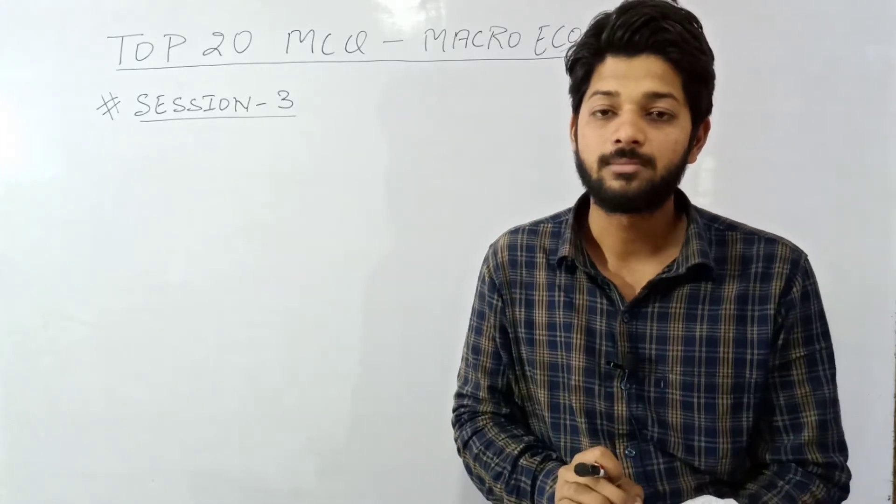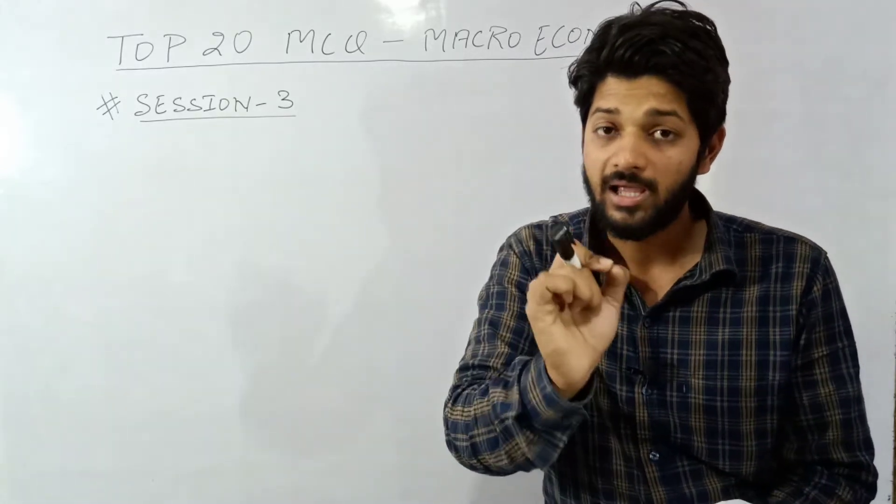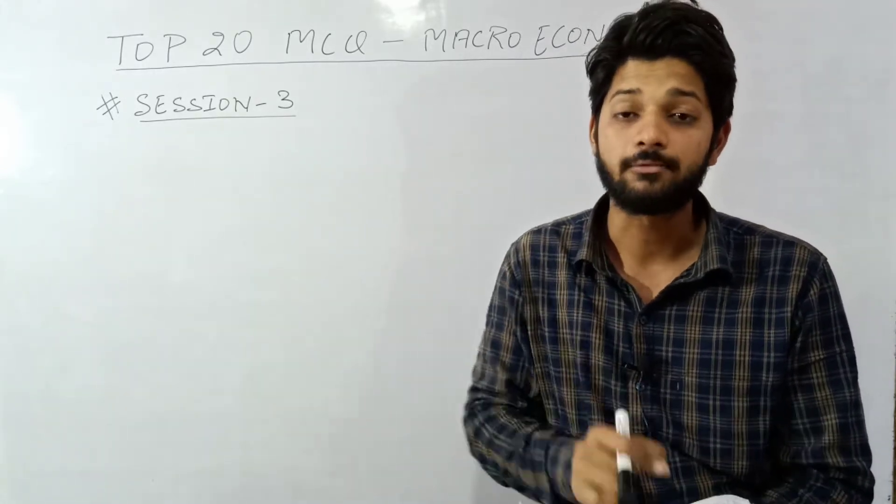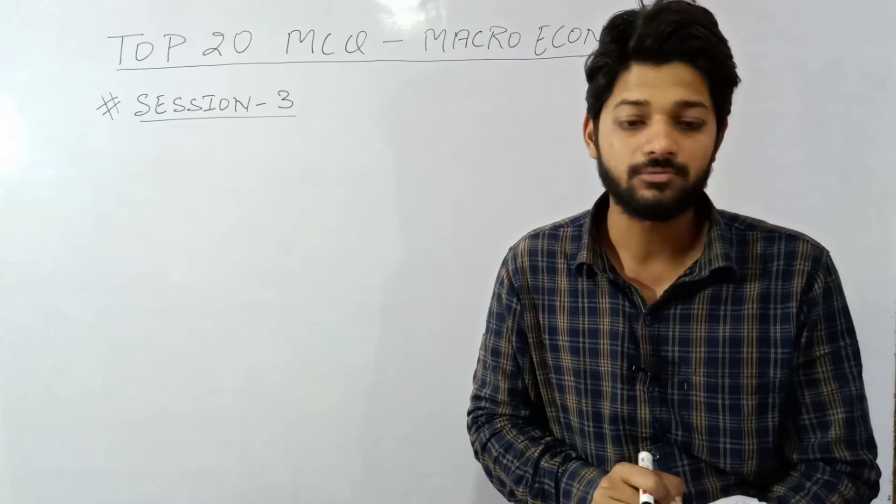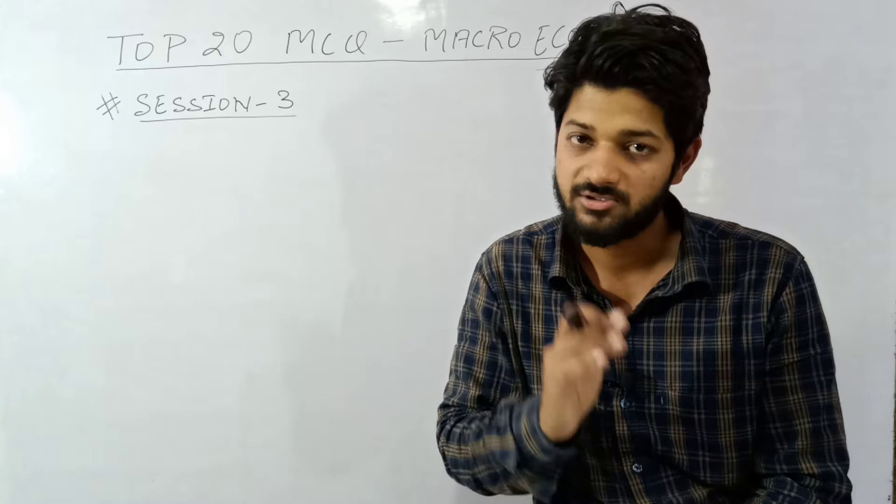Question number fourteen: M1, M2 narrow money. M3, M4 broad money. M1 is most liquid. M4 is least liquid. And M3's specialty - M3 can be considered as aggregate monetary resource for society.